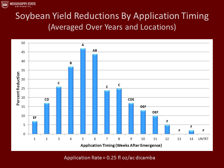This graph represents soybean yield reductions by application timing, averaged over all years and locations. The greatest amount of yield reduction occurred at weeks five and six, ranging from about 44% to 47% yield reduction. After the nine-week application was made, we saw no significant yield reductions in the field.